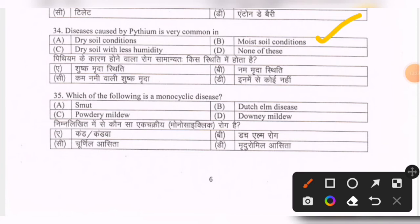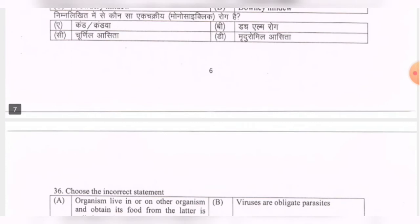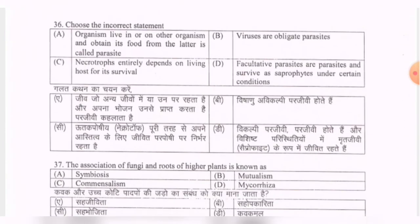Next question: which of the following is a monocyclic disease? Options are smut, Dutch elm disease, powdery mildew, downy mildew. The correct option is the first one — smut.